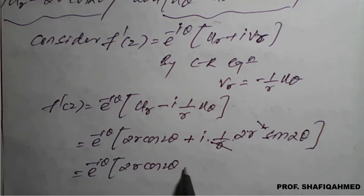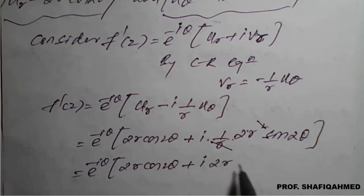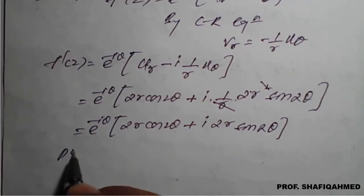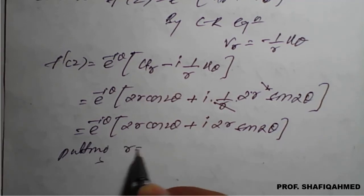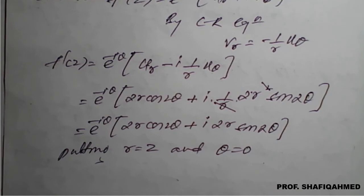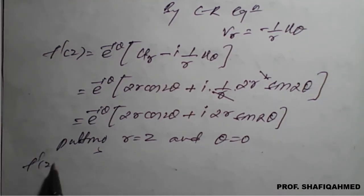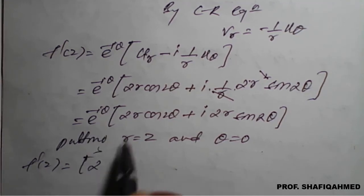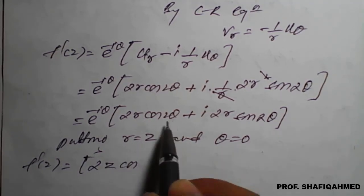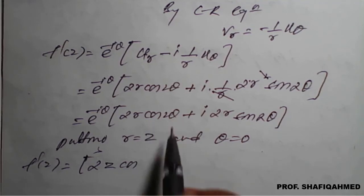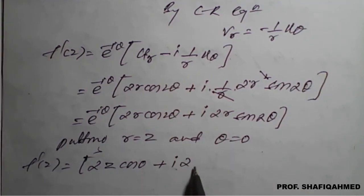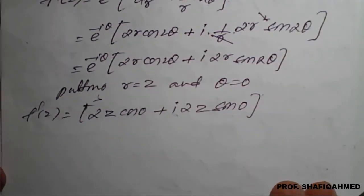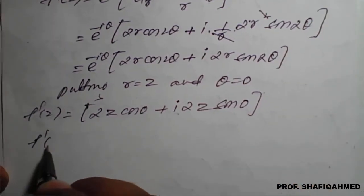So we have f'(z) = e^(−iθ) · [2r cos(2θ) + i·2r sin(2θ)]. Now, applying the Milne-Thomson rule by putting r = z and θ = 0. So e^(−i·0) = 1. We get f'(z) = 2z cos(0) + i·2z sin(0).